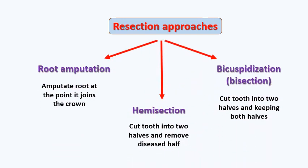The three types of resection approaches are: root amputation, hemi-sectioning, and bicuspidization. Root amputation is mainly for upper molars, while hemi-sectioning and bicuspidization are for lower molars. In root amputation and hemi-sectioning, a part is cut and completely removed. In root amputation, one root of a multi-rooted tooth is amputated at the junction between the crown and the root.